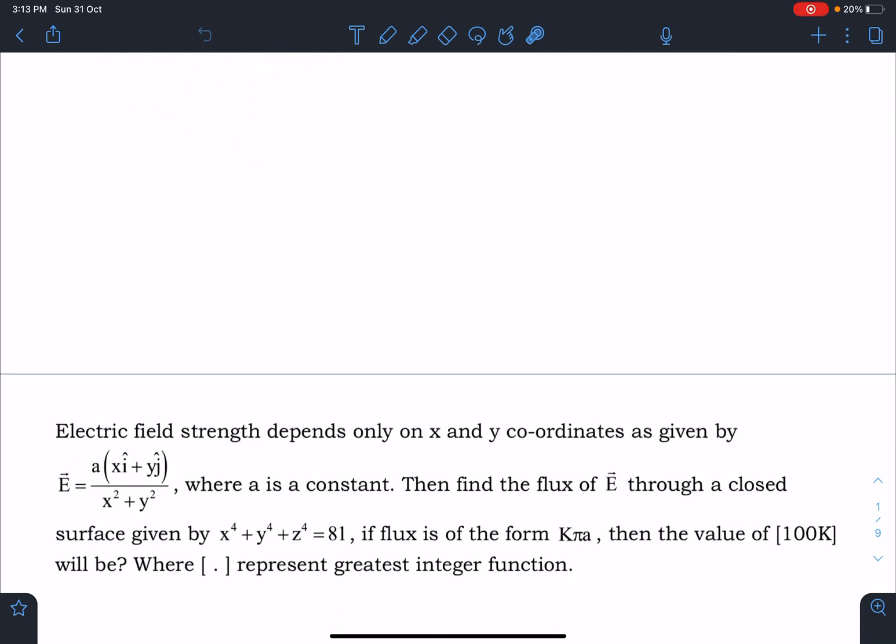Electric field strength depends only on x and y coordinates as given by vector E equals a times xi plus yj divided by x square plus y square, where a is a constant. Then find the flux of vector E through a closed surface given by x to the power 4 plus y to the power 4 plus z to the power 4 equals 81. If flux is of the form k pi a, then the value of 100k will be where bracket represents the greatest integer function.